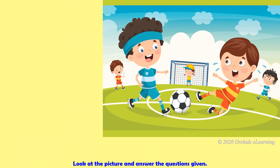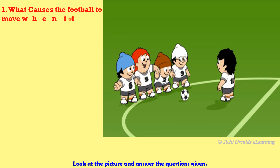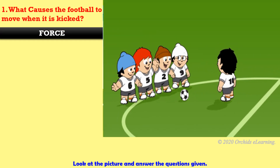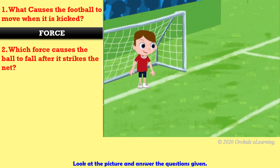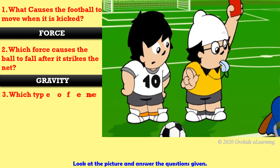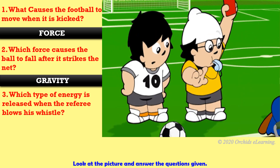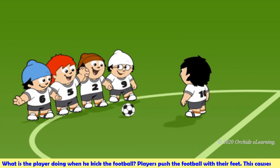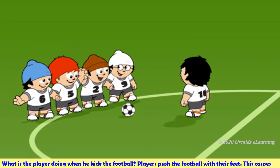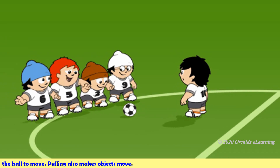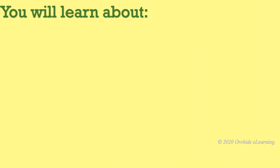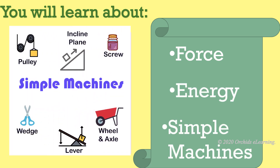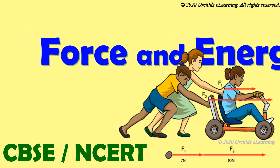Children, before starting today's session, look at the picture given and answer some questions. What causes the football to move when it is kicked? Force. Which force causes the ball to fall after it strikes the net? Gravity. Which type of energy is released when the referee blows his whistle? Sound energy. The player pushes the football with their feet, causing the ball to move. Pulling also makes objects move.